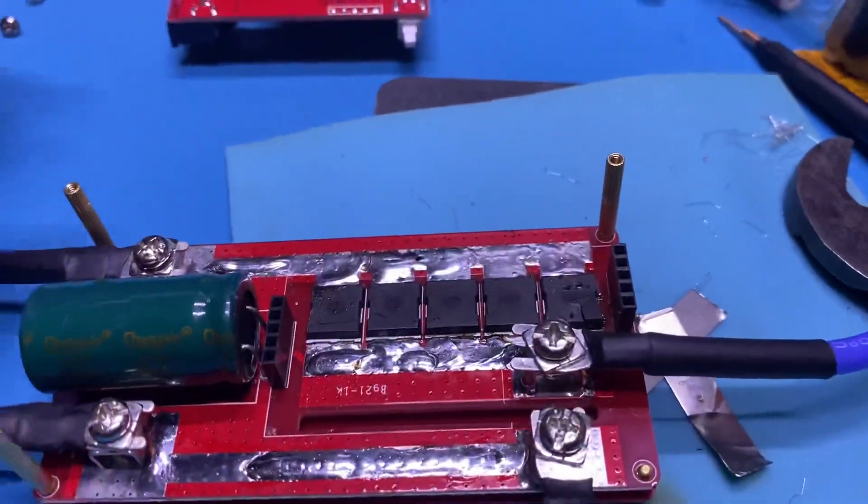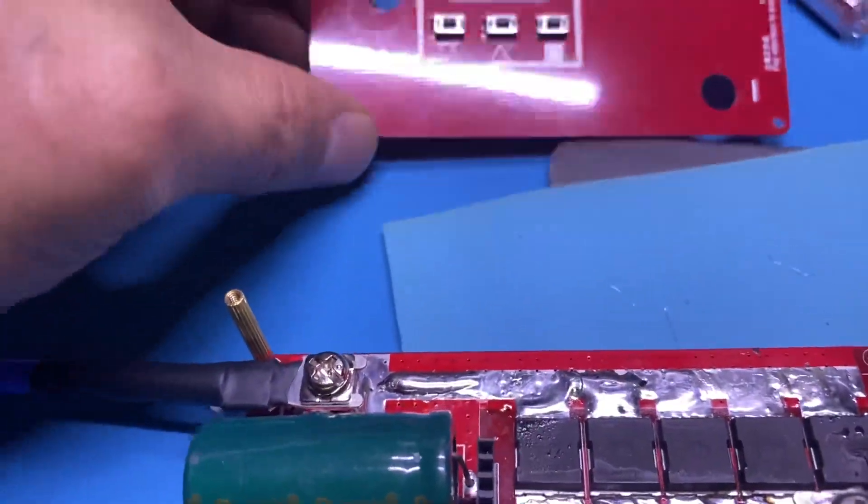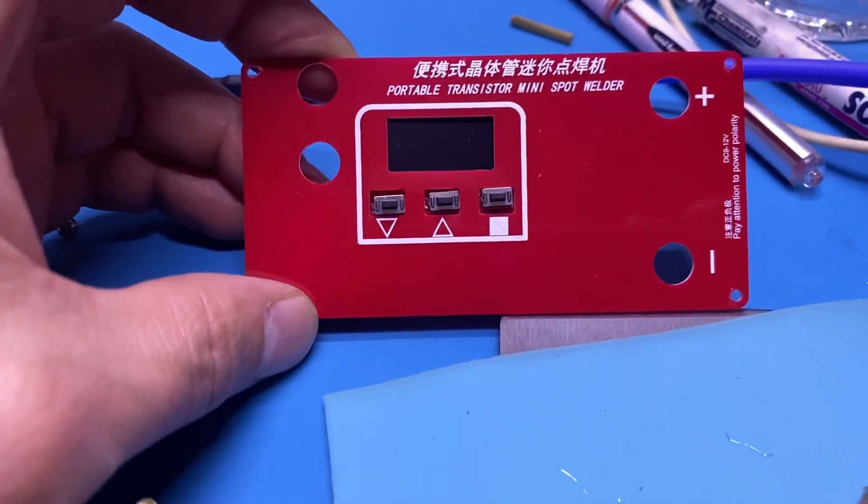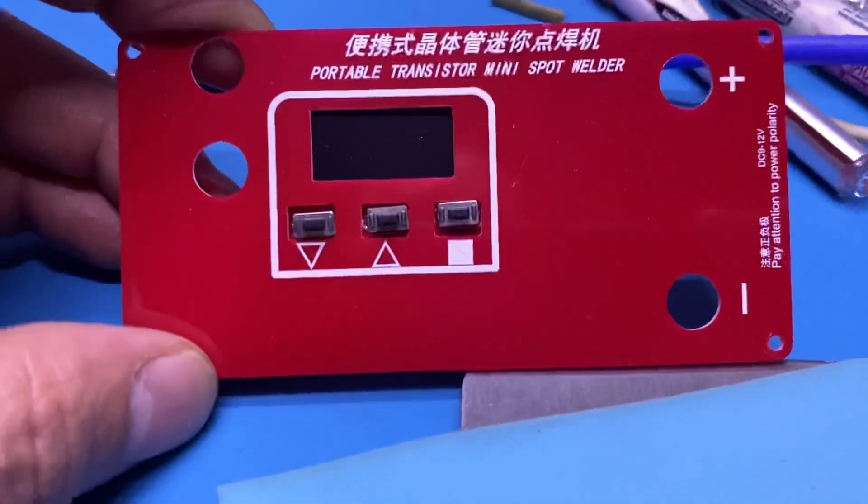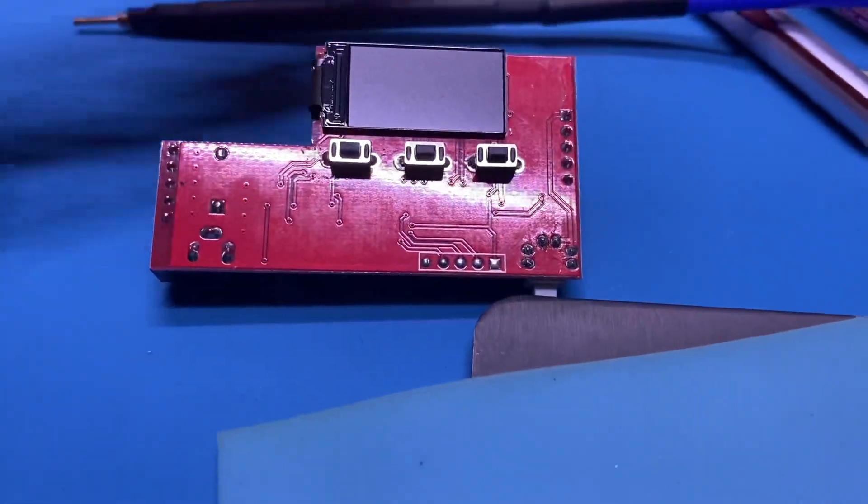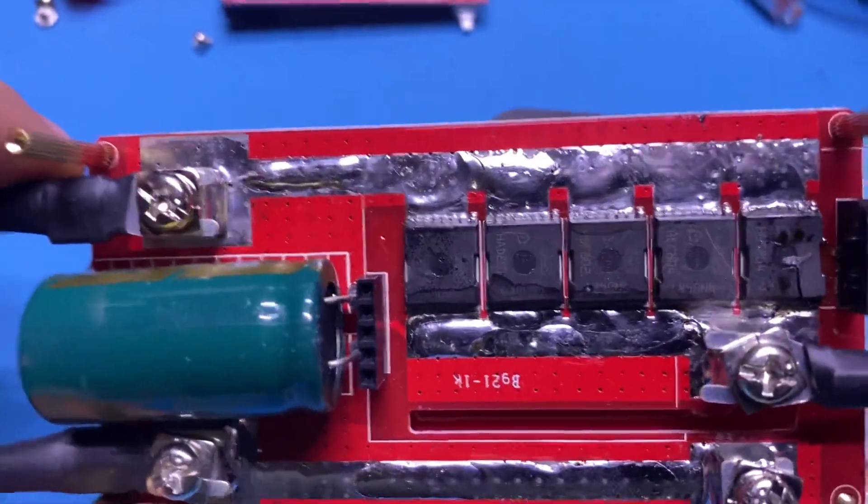Let's look at this. This is the front cover right here. By the way, this is what it looks like, the front cover of this little mini spot welder. So do not buy this, this is crap.